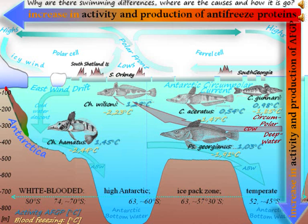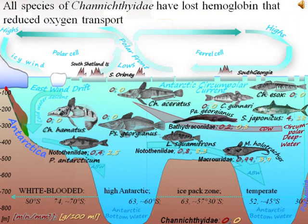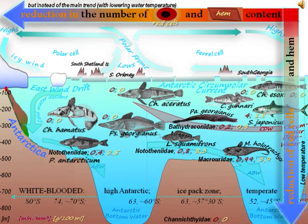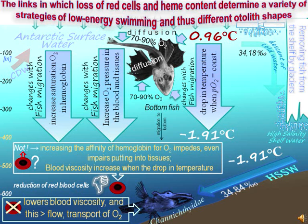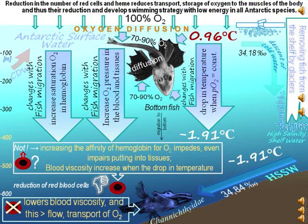Why are there swimming differences, and what are the causes? Increase in activity and production of antifreeze proteins: all species of Chaenichthyidae have lost haemoglobin, which reduces oxygen transport. Instead of the main trend of reduction in red blood cells and haem content from low to high Antarctic fish, they spread across all Antarctica from temperate to high Antarctic waters, from surface across pelagic to bottom deep waters. The links in which loss of red cells and haem content determine a variety of low-energy swimming strategies, and thus different otolith shapes.